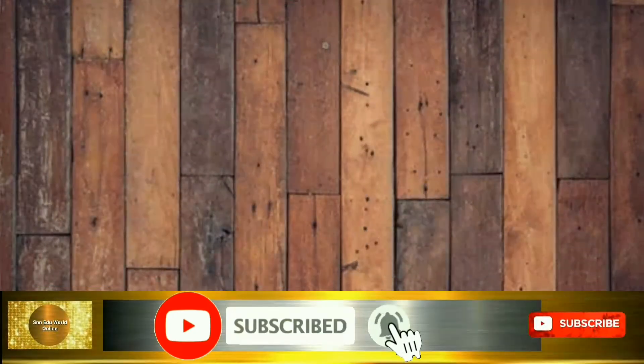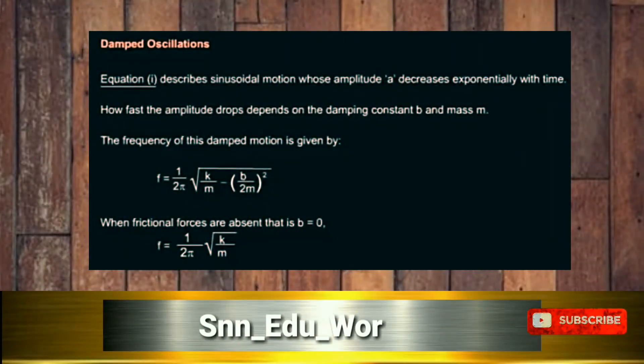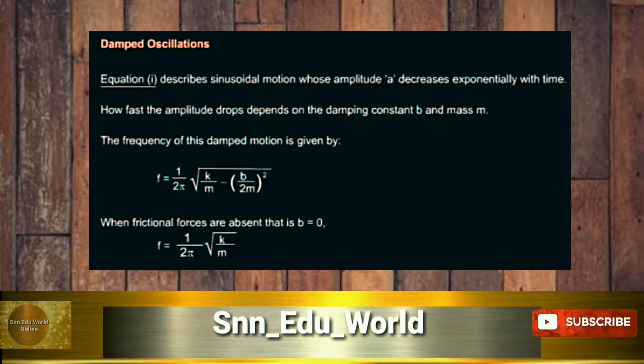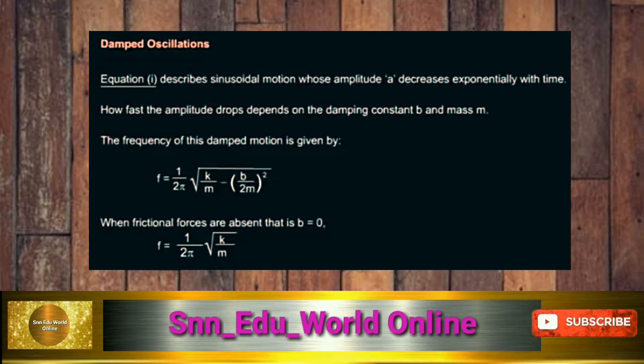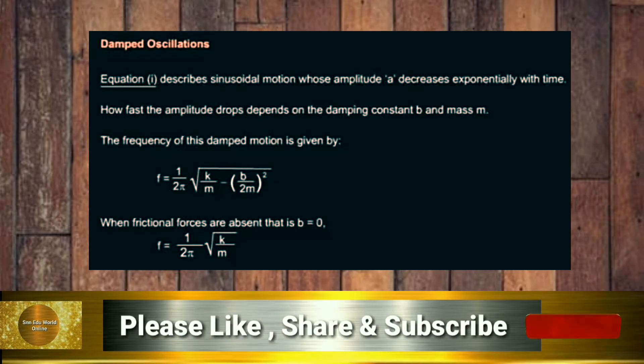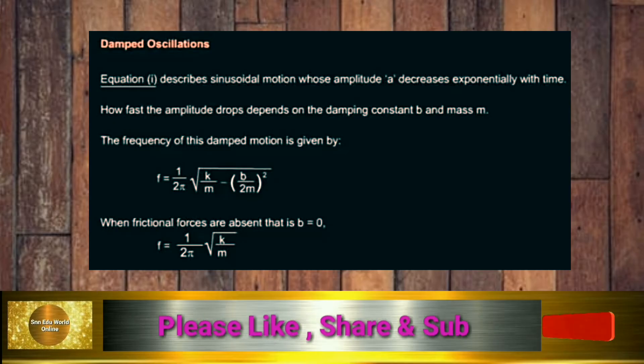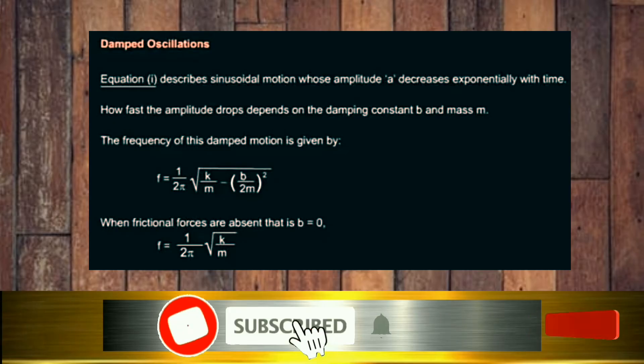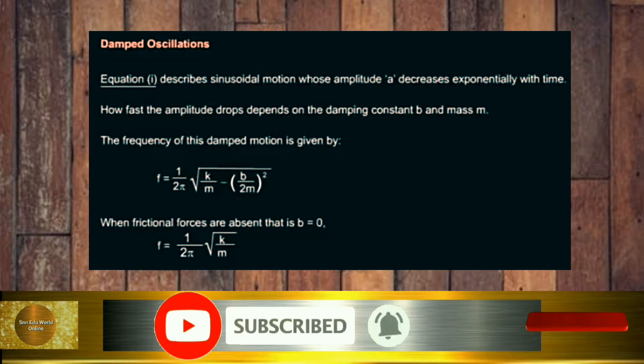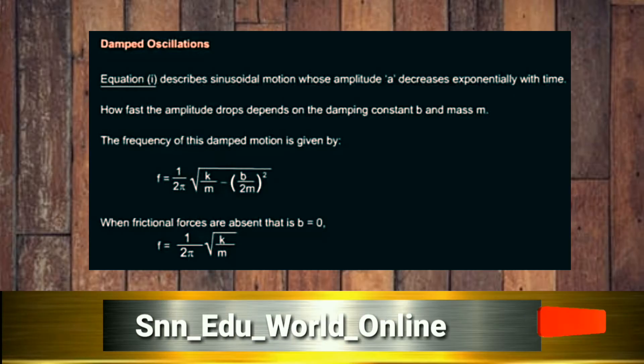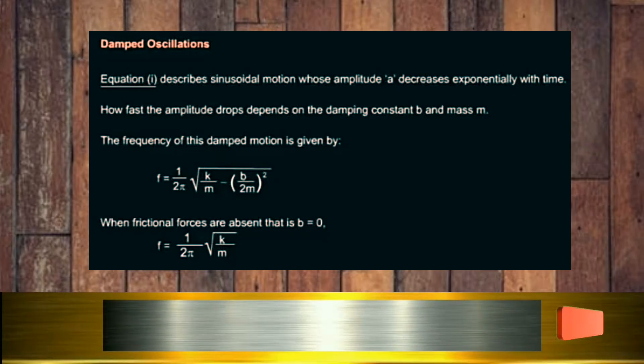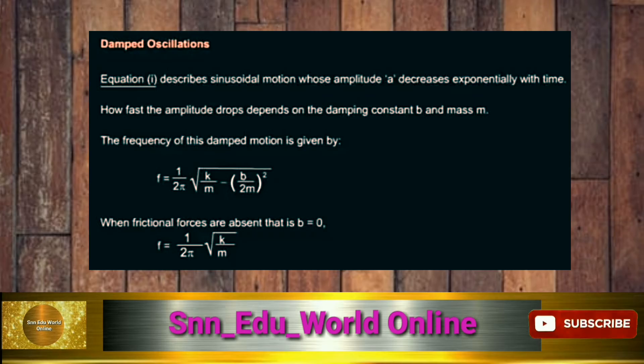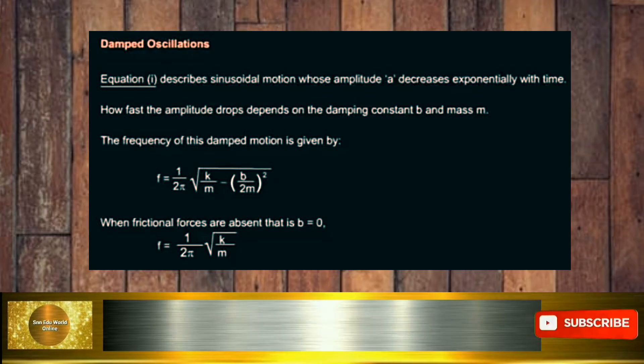Equation 1 describes sinusoidal motion whose amplitude A decreases exponentially with time. How fast the amplitude drops depends on the damping constant b and mass m. The frequency of this damped motion is given by f = (1/2π)√(k/m - (b/2m)²).